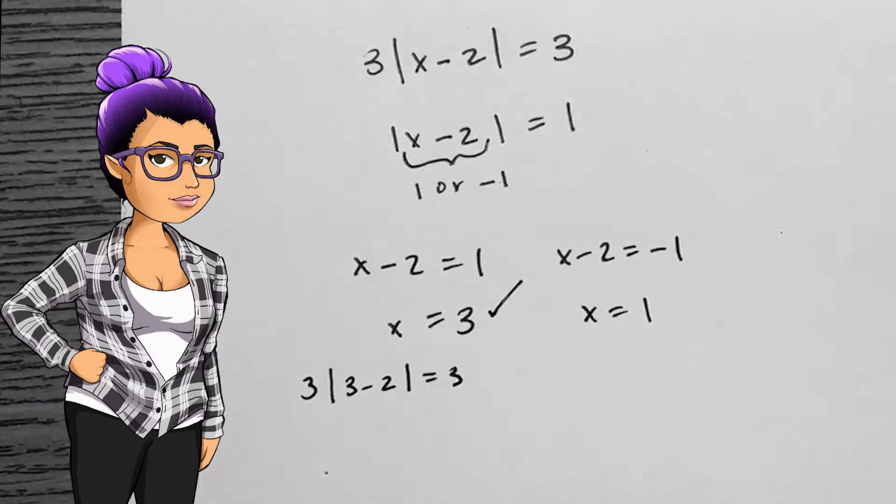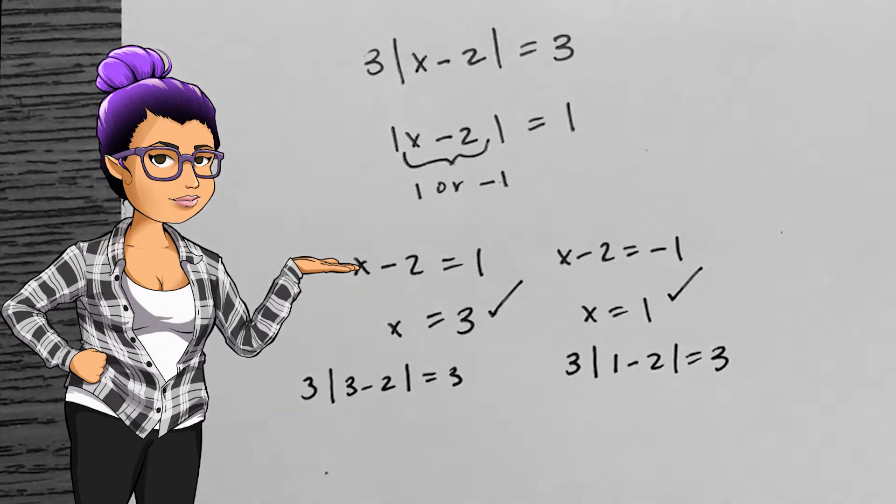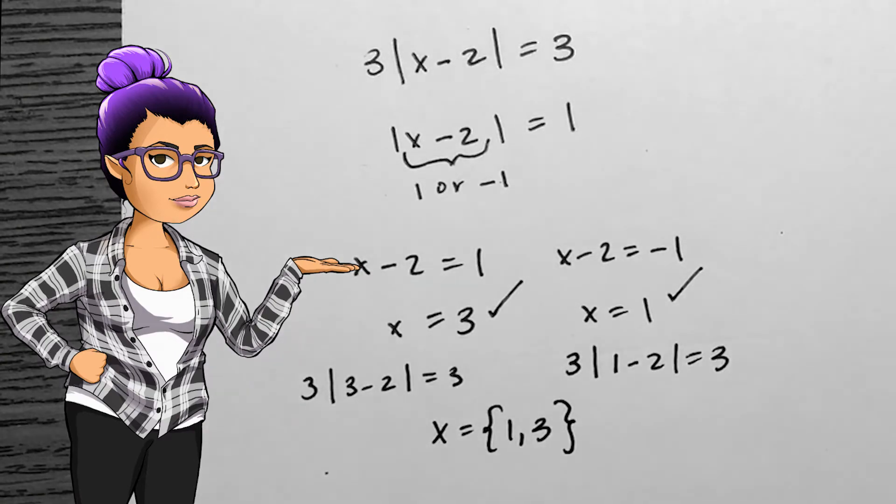If it's equal to positive 1, then x is 3. If it's equal to negative 1, then x is 1. These are my two solutions for the equation. I can go back to the original equation to check them both.